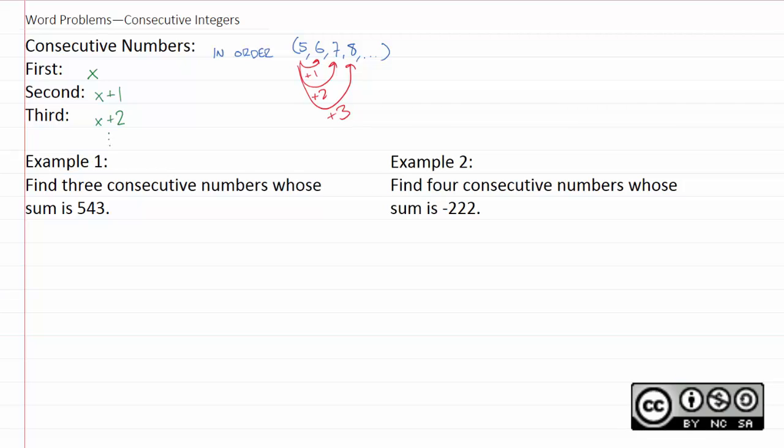So for example one, they ask us to find three consecutive numbers whose sum is 543. It might seem redundant, but it's a good idea to get in the habit of writing your three numbers. So x, x plus one, x plus two. And what we know is that all three of those will add up to 543.